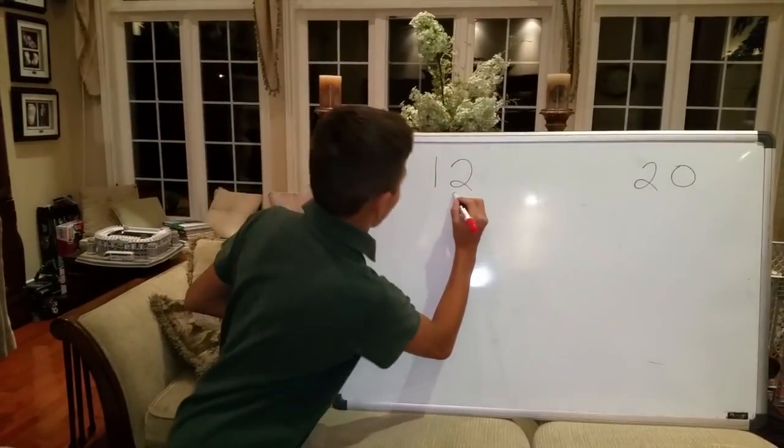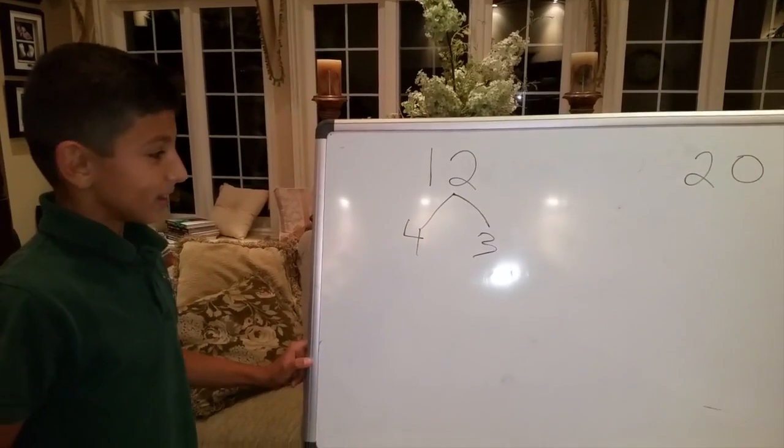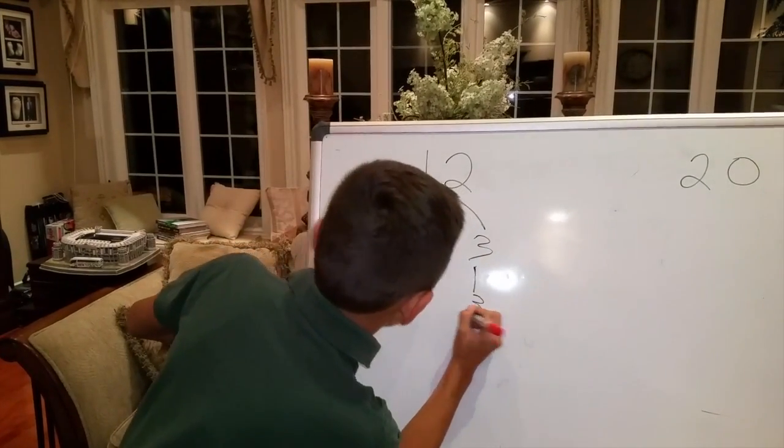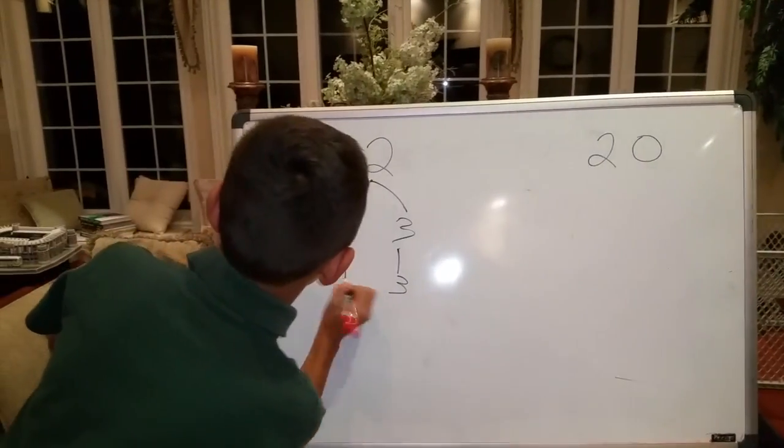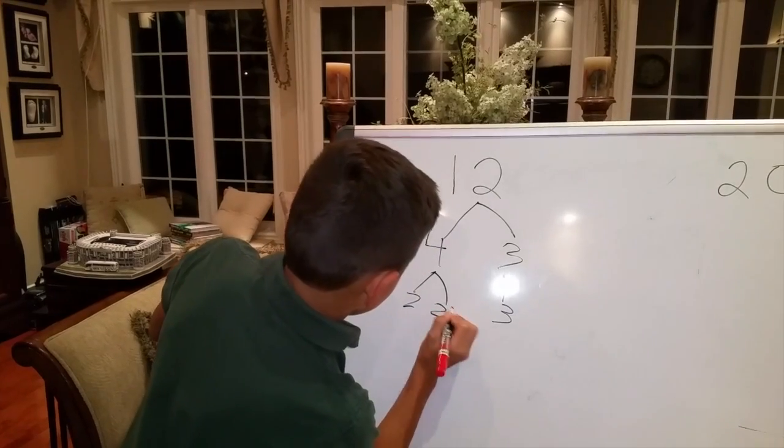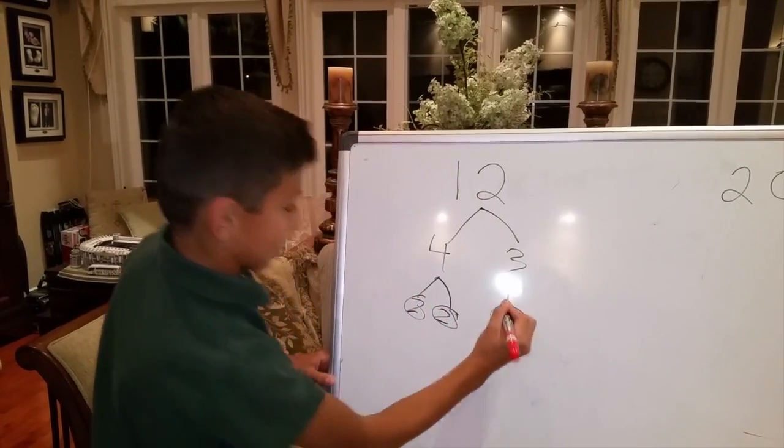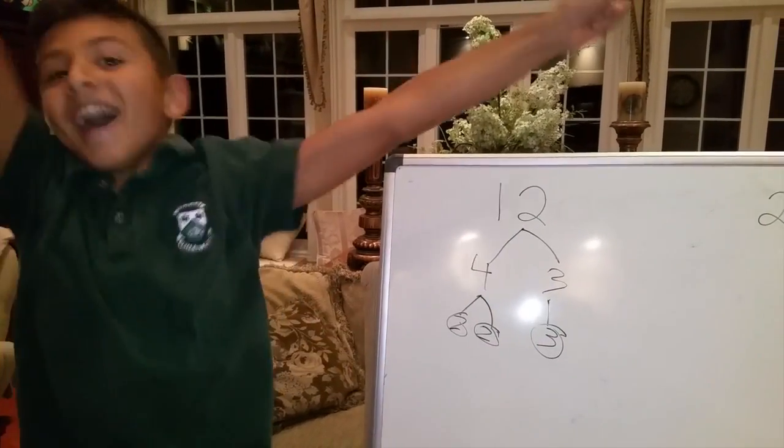Okay Ty, so what two numbers go into 12? 4 and 3. Correct. Is 3 a prime factor? Yes. Is 4 a prime factor? No. What two numbers go into 4? 2. Here it is, ladies and gentlemen. What is 2 times 2 times 3? 12. Yay!